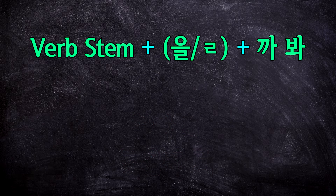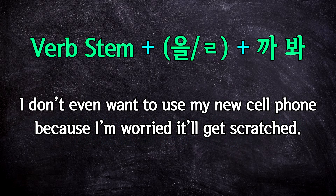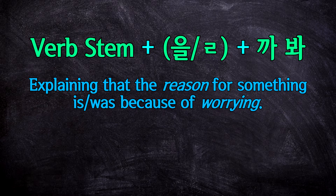So what is this form used for? It's used whenever you want to explain that the reason you did something was because you were worried. For example, you might use this form to say something like: I don't even want to use my new cell phone because I'm worried it'll get scratched. You can think of this form as meaning 'because,' but only when the reason is something that you were worried about.